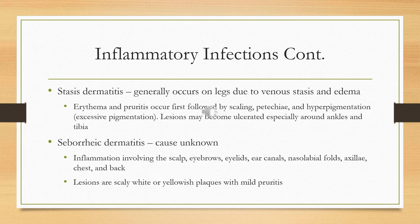Seborrheic dermatitis — the cause is not really known, but it could result from hormonal influence, nutrient deficiency, neurogenic infections, sebaceous gland dysfunction, or fungal infection. It's a chronic inflammatory skin condition that occurs in areas of active sebaceous glands — the face, scalp, body folds, sternal area, axilla. The lesions are typically scaly white or yellowish plaques with mild pruritus.